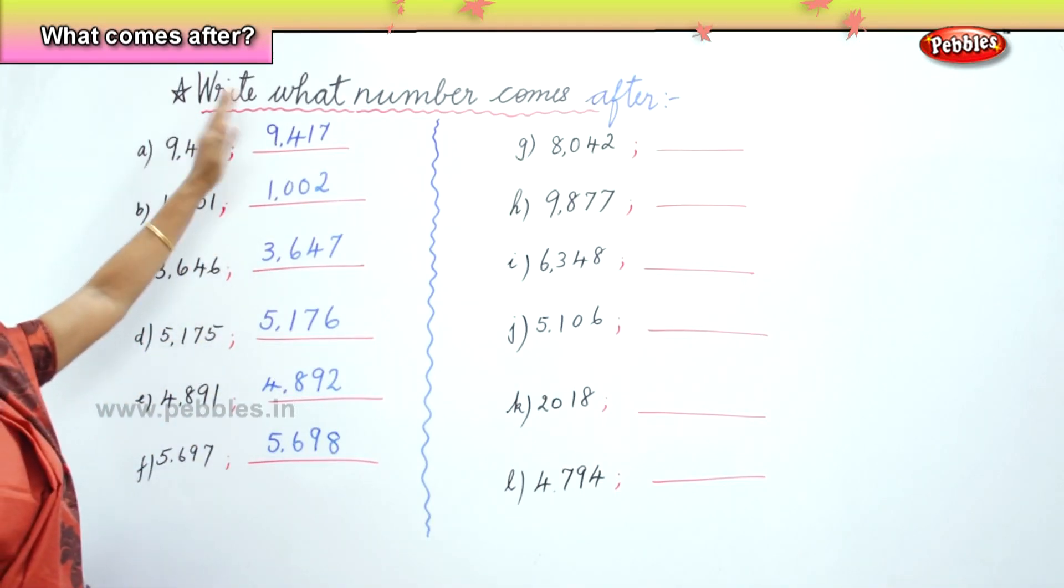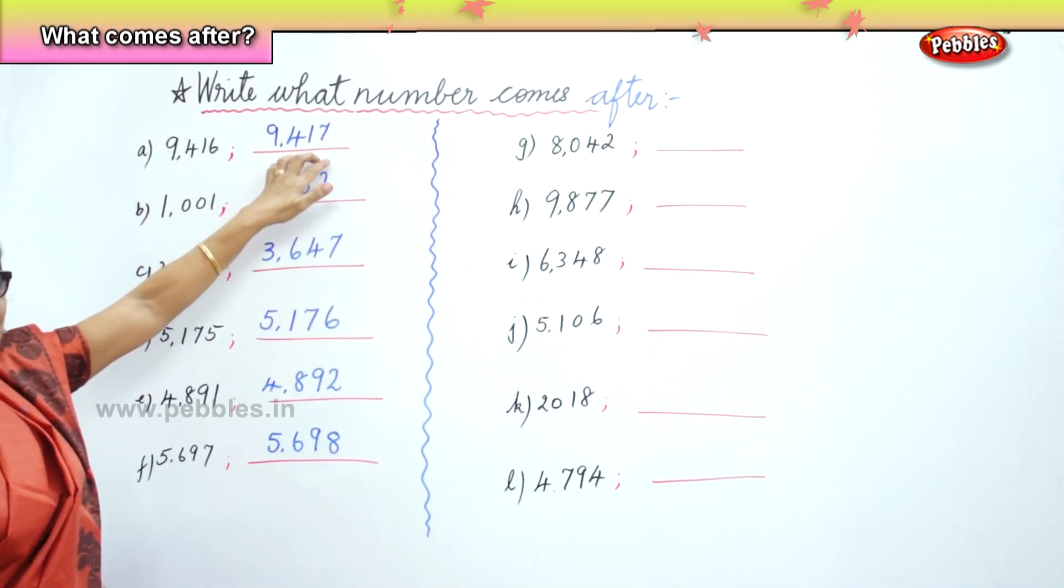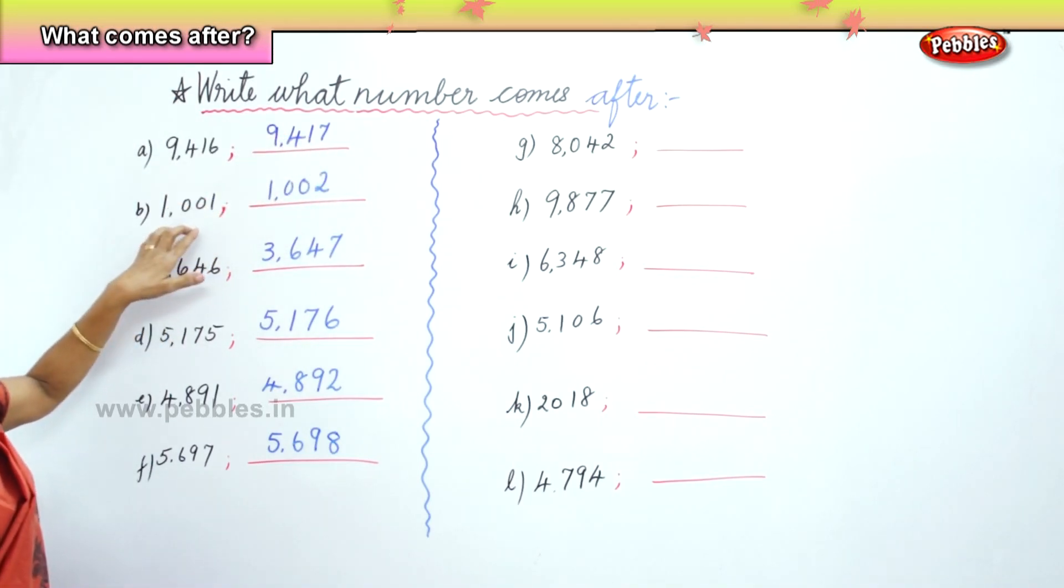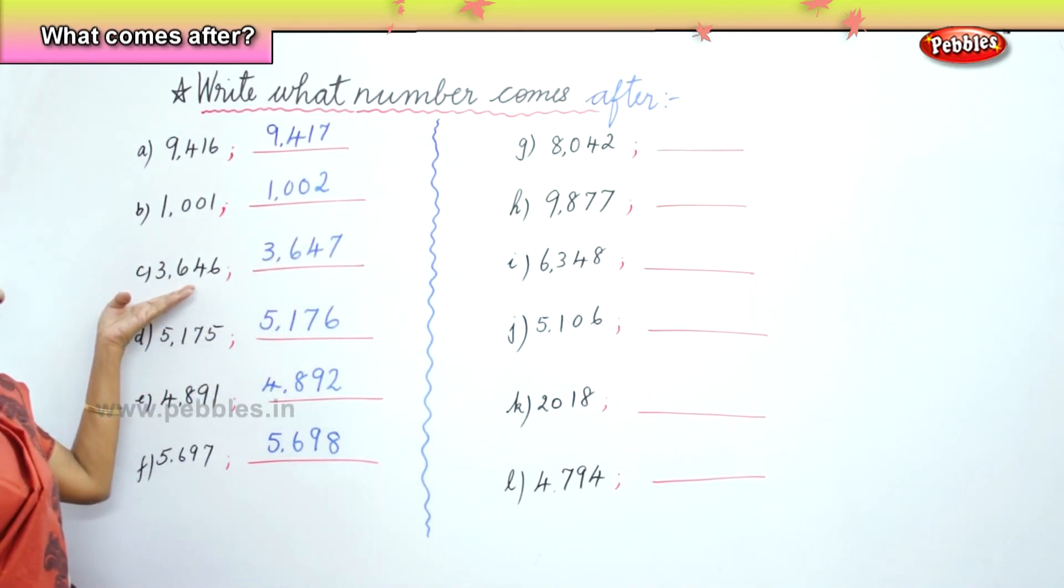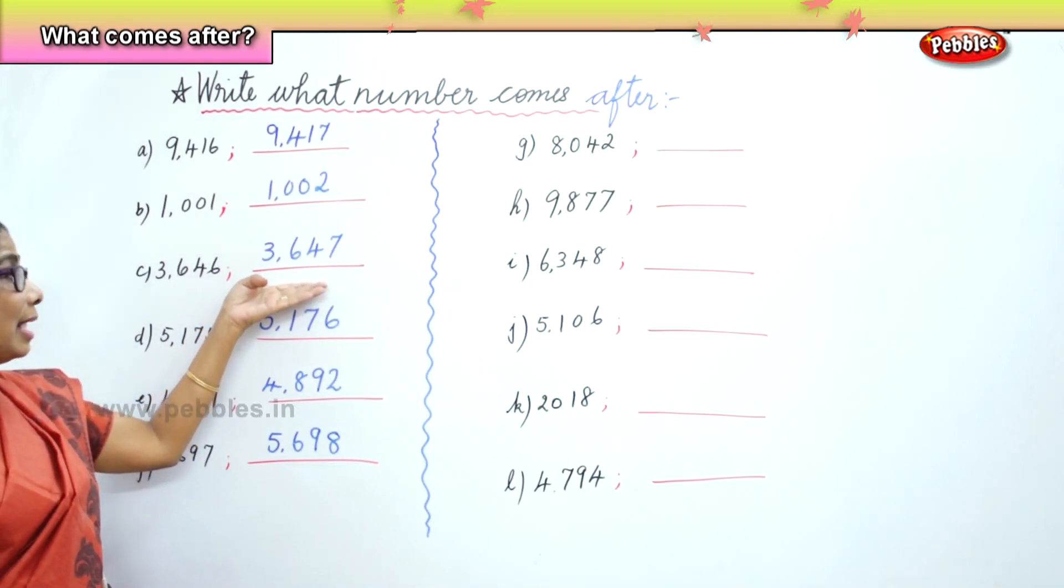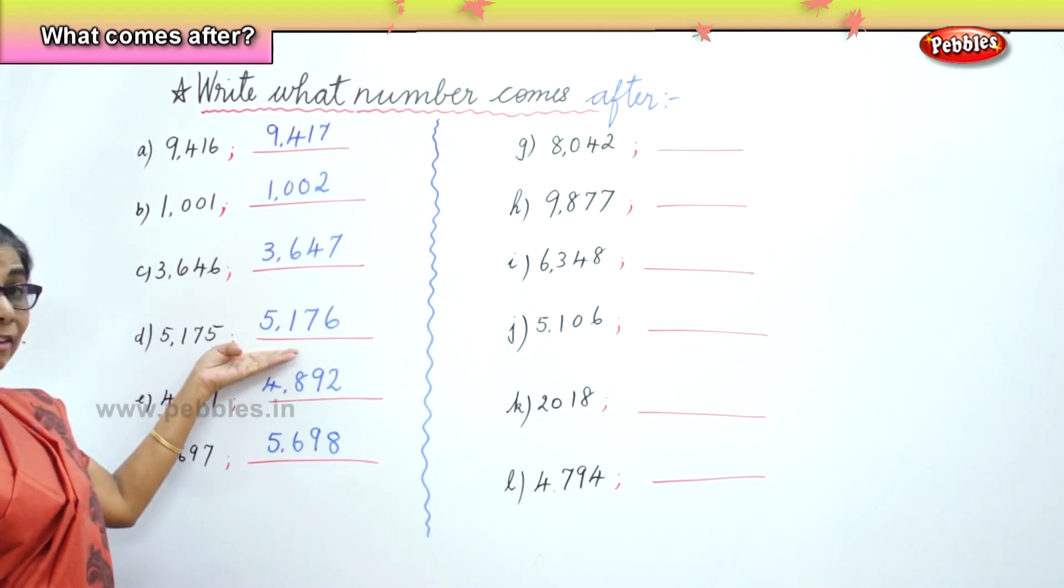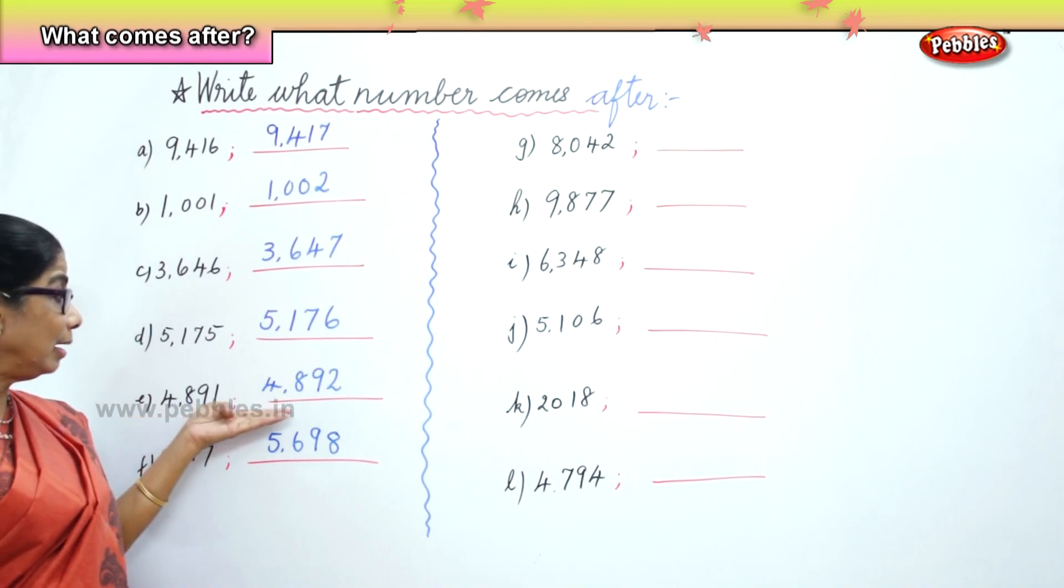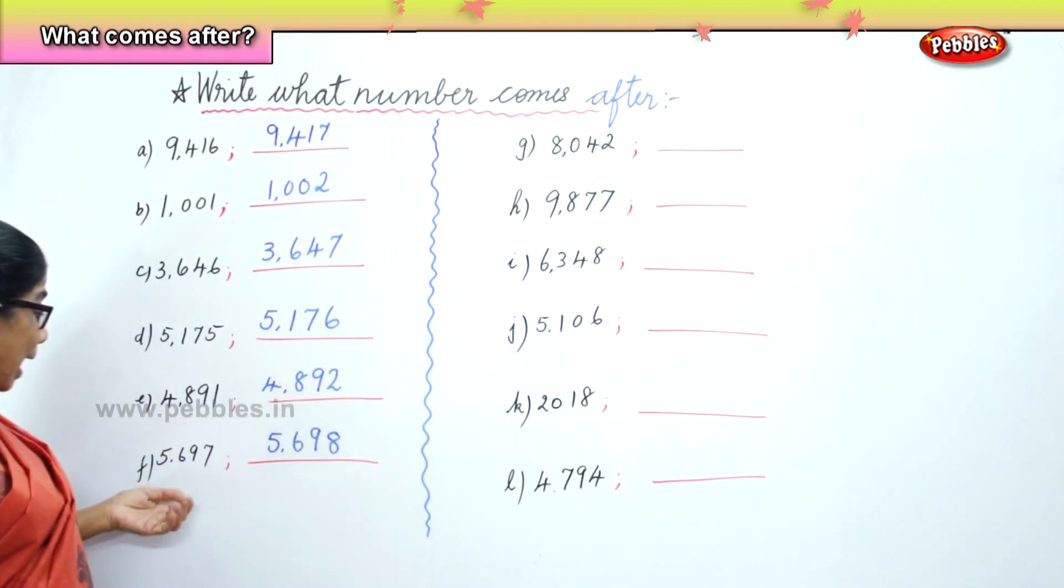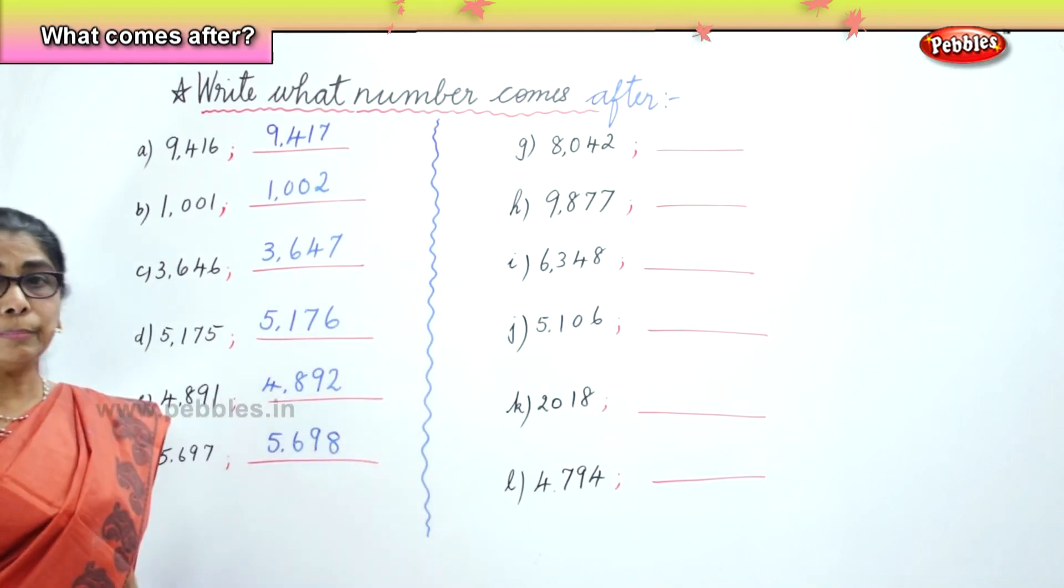So we have done what number comes after? 9,416, 9,417. 1,001, we get 1,002. 3,646, 3,647. 5,175, 5,176. 4,891, 4,892. And then 5,697, 5,698. Now I have another lot of number for you.